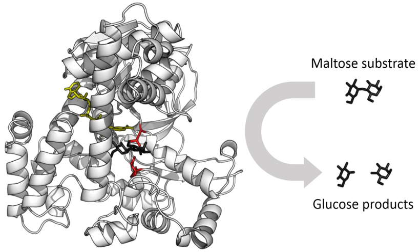Allosteric sites are pockets on the enzyme, distinct from the active site, that bind to molecules in the cellular environment. These molecules then cause a change in the conformation or dynamics of the enzyme that is transduced to the active site and thus affects the reaction rate of the enzyme. In this way, allosteric interactions can either inhibit or activate enzymes. Allosteric interactions with metabolites upstream or downstream in an enzyme's metabolic pathway cause feedback regulation, altering the activity of the enzyme according to the flux through the rest of the pathway.